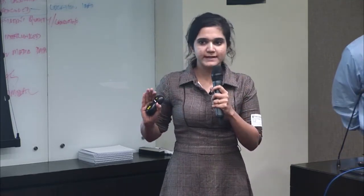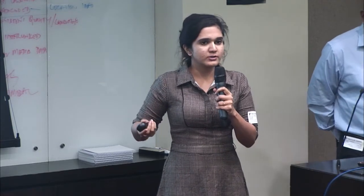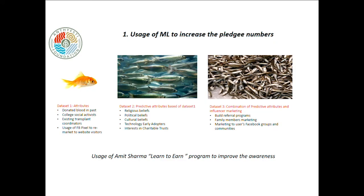What we plan to do in the future is implement specific social media audience marketing. Based on that, we are going to get more in-depth attributes about these people — their religious beliefs, their political beliefs, or how many of them have a good interest in charitable trusts. This is how we slowly plan to build an initial set of data on those who are most likely to become pledges. Then, taking these characteristics, we are going to market to all possible audiences sharing certain attributes.